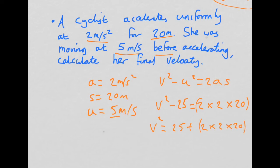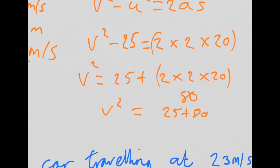So 2 times 2 times 20, that's 4 times 20. That's going to be 80. 25 plus 80. So 25 plus 80 is going to give you V squared, which is 105. So V squared is 105. So that means V, then, is going to just be square root of 105.